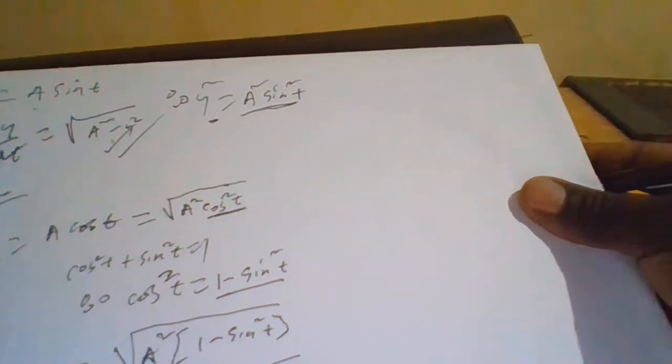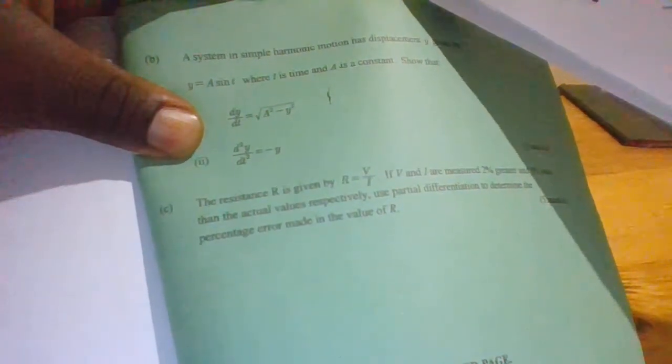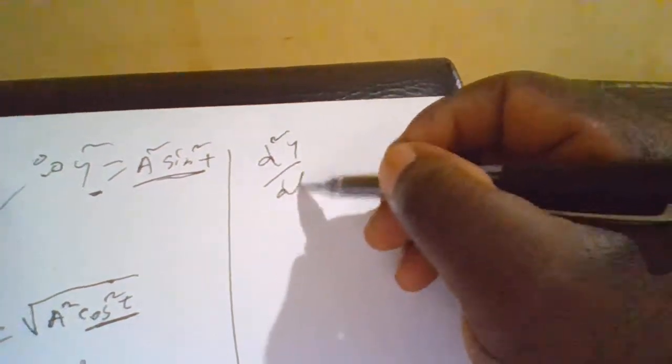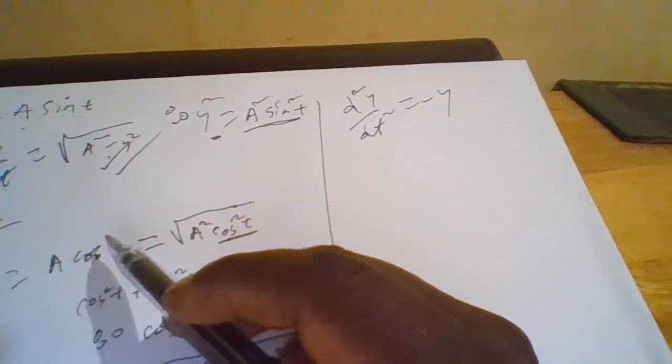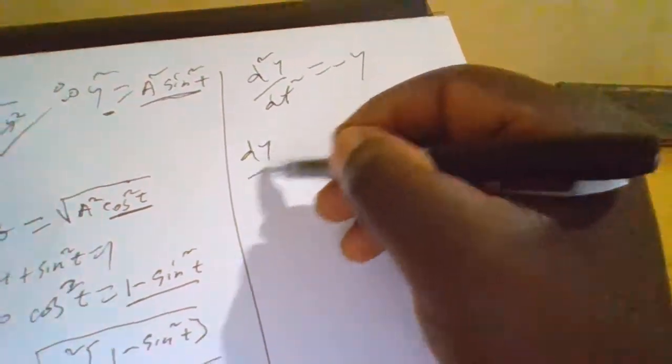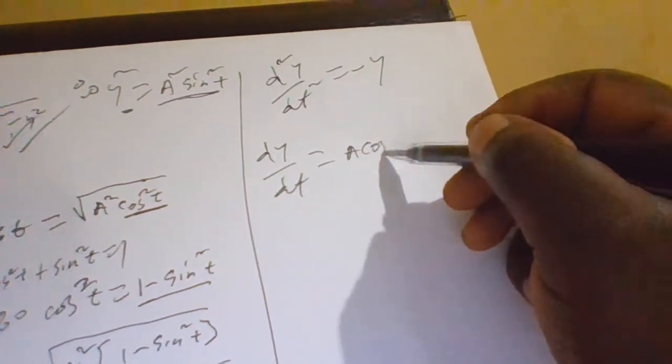Then for part (ii), they want us to show that d²y/dt² equals negative y. Remember we said that dy/dt equals A cos t.